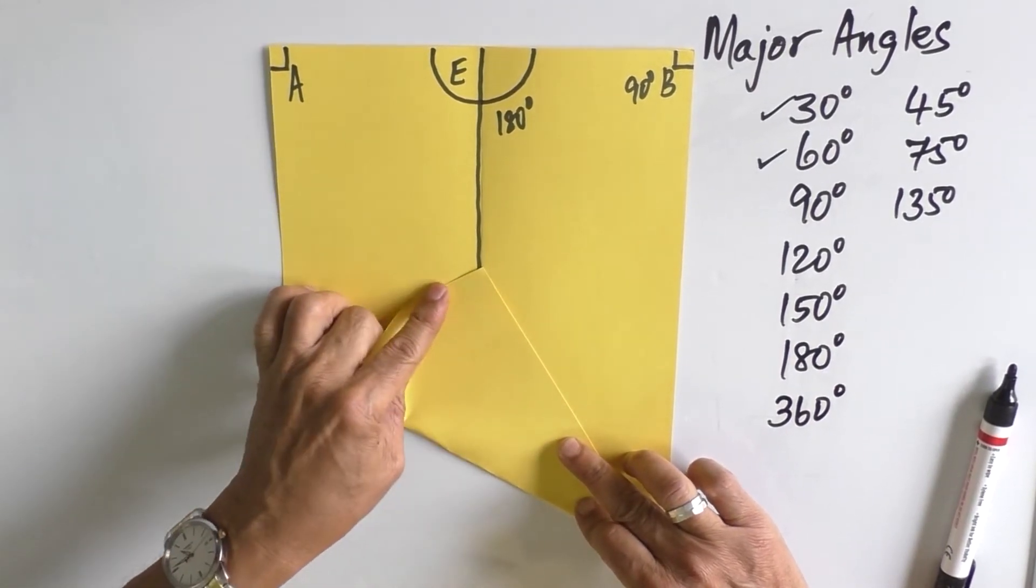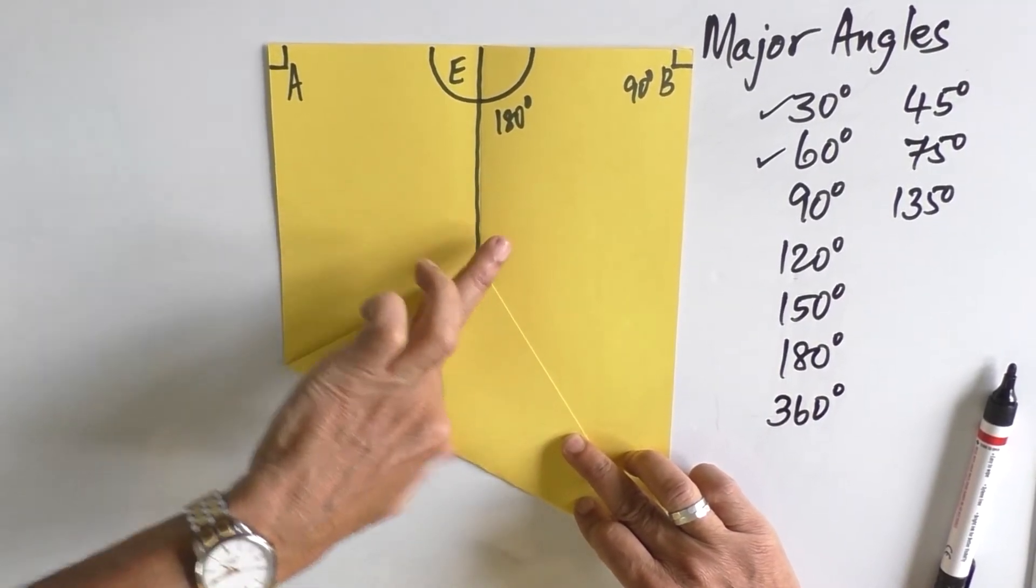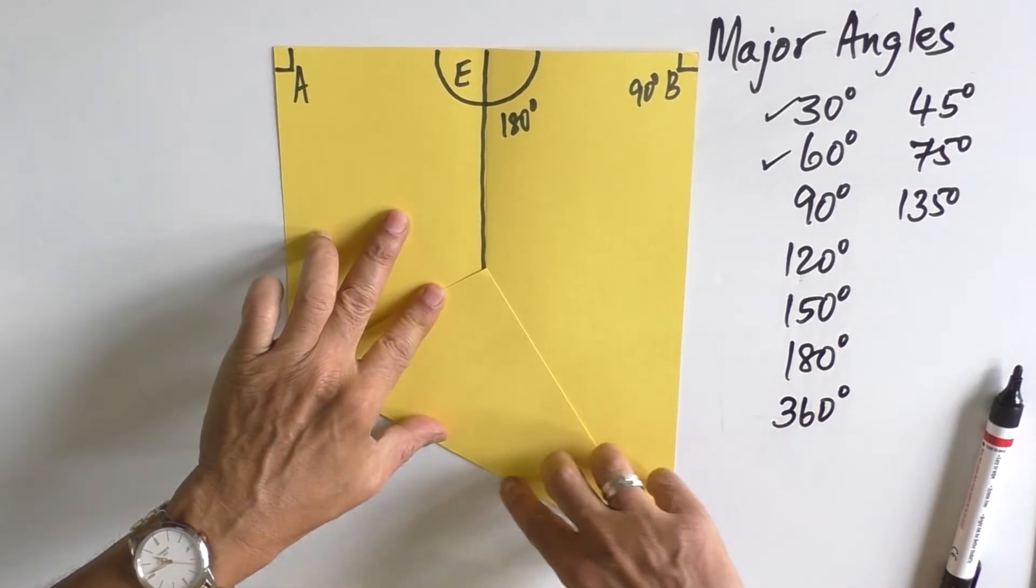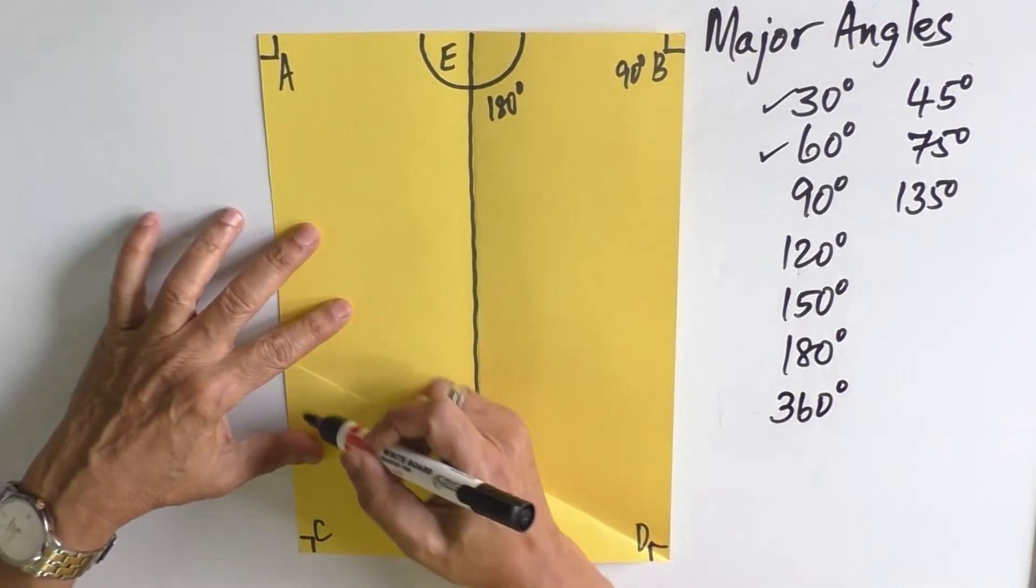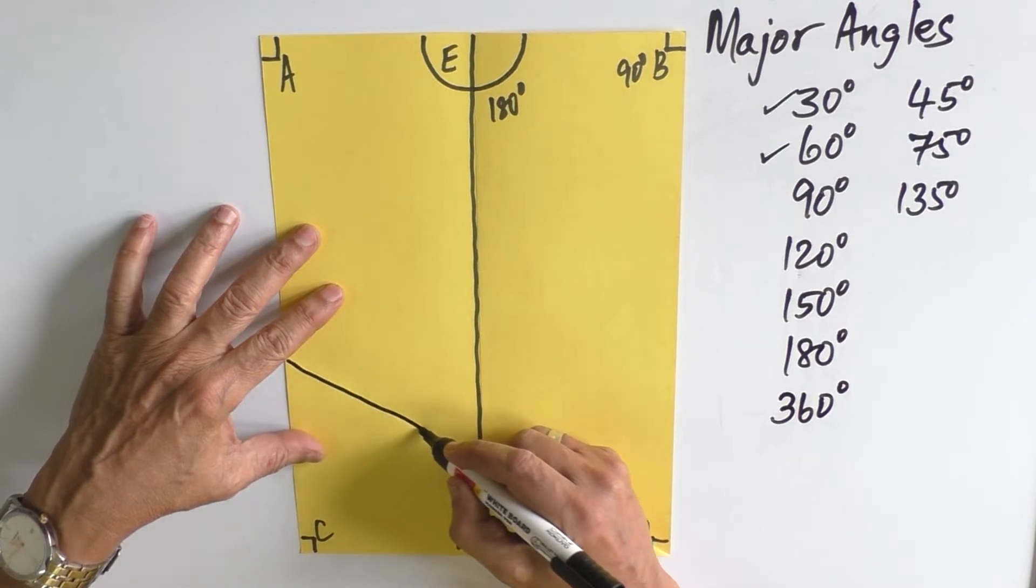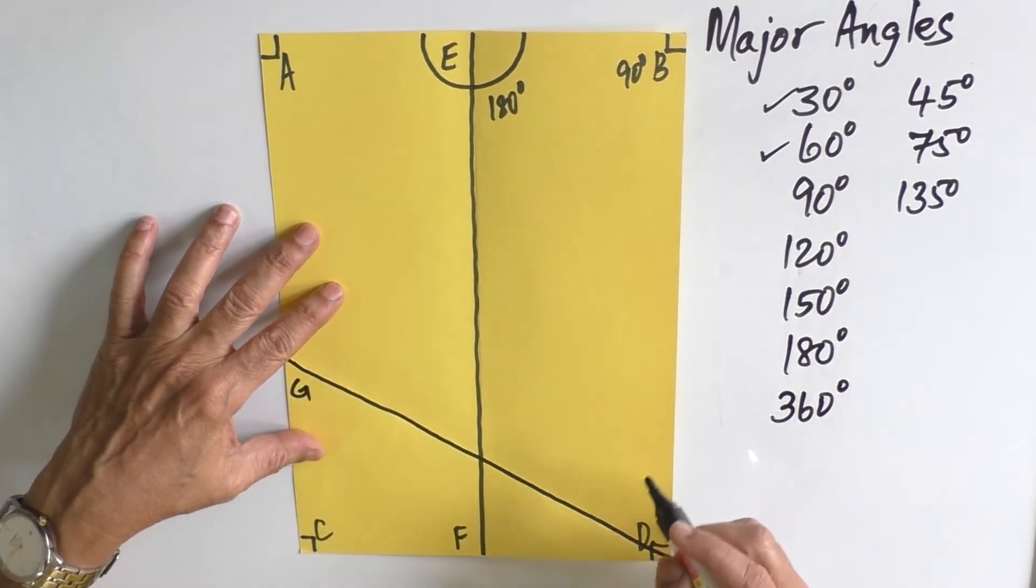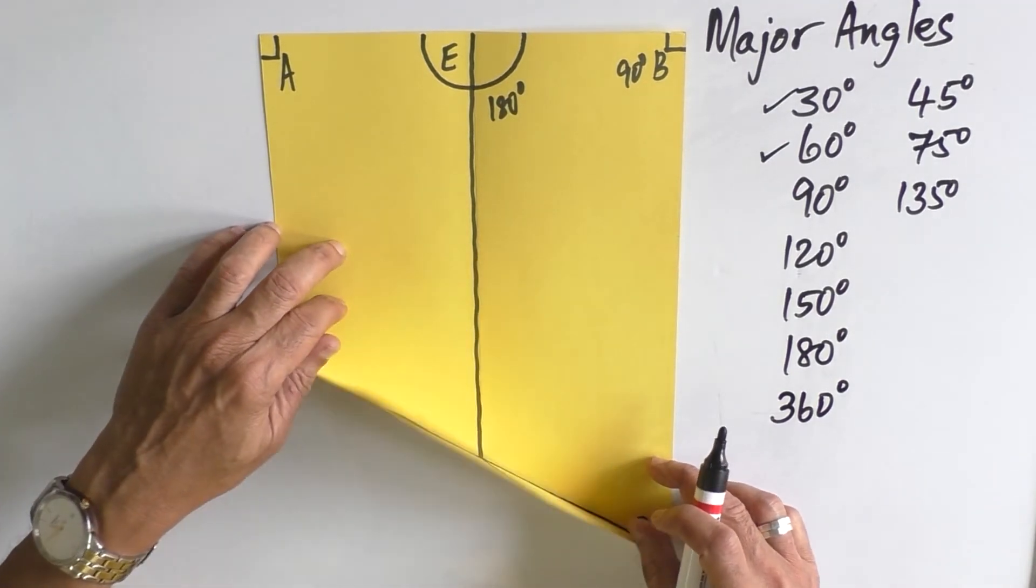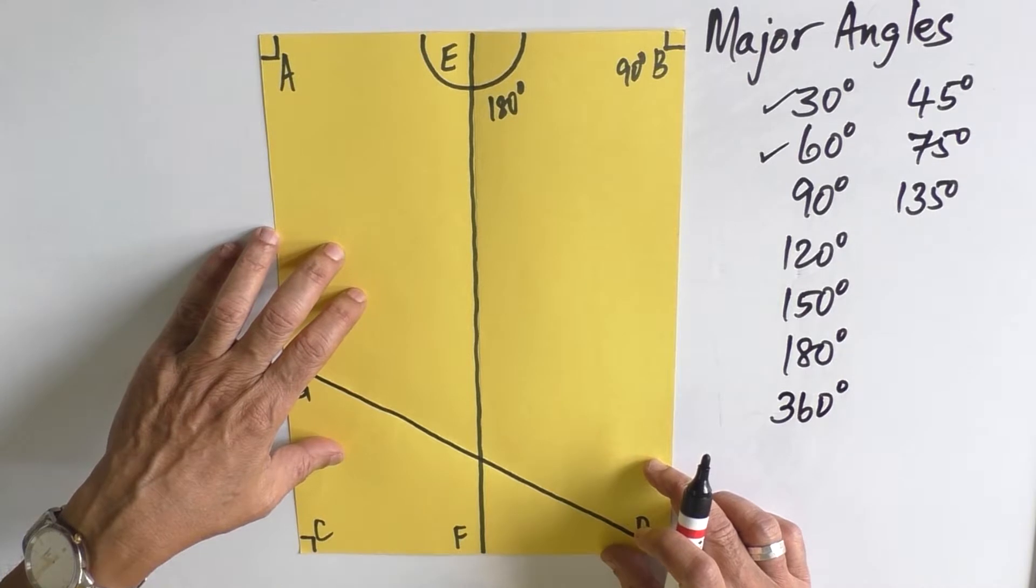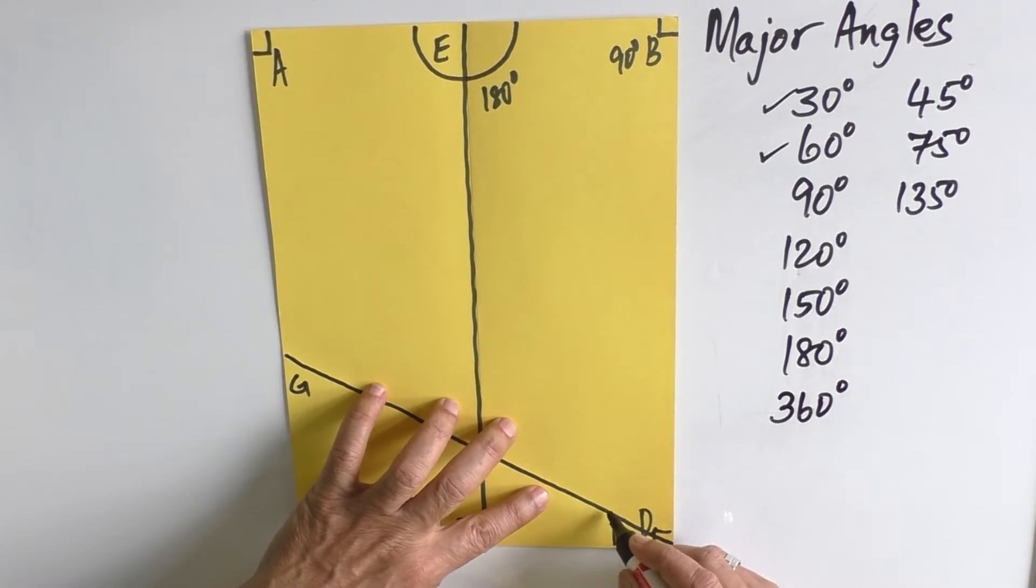a way that point D is giving us two angles. Now let us join this line and call that DG. So the line DG is dividing the angle into two parts, but not equally. There is a smaller angle and there is a major angle.